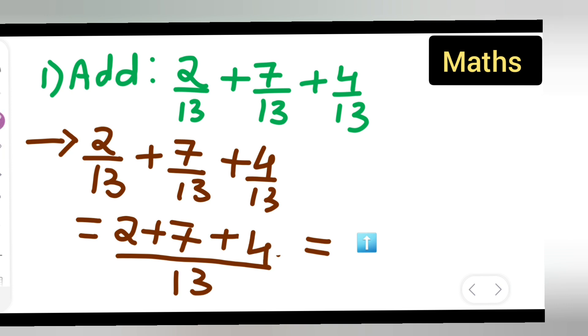So add these numbers: 4 + 7 = 11, and 11 + 2 = 13. You get 13/13.